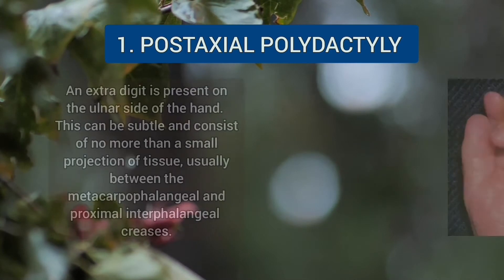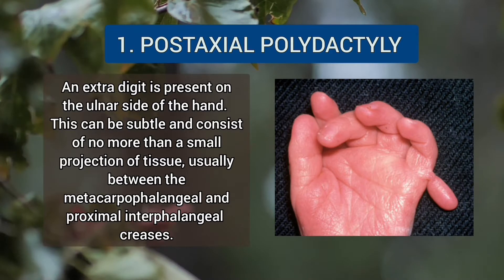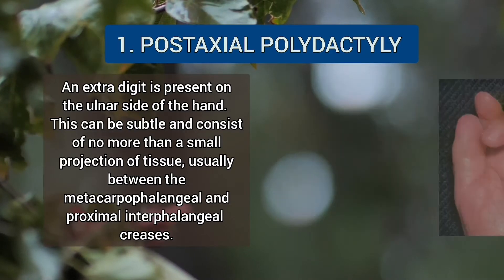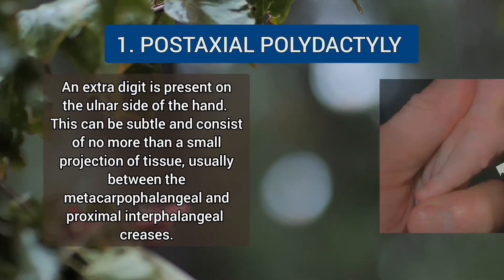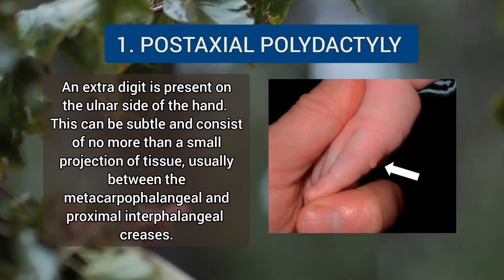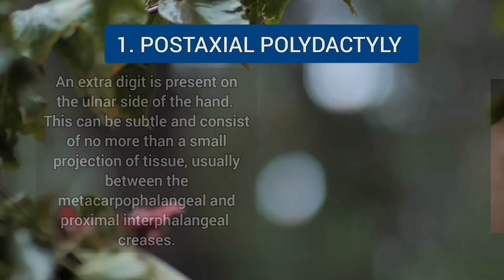Post-axial polydactyly means there is an extra digit on the other side of the hand. This can be subtle and consists of no more than a small projection of tissue, and it is usually between the metacarpophalangeal and proximal interphalangeal creases.